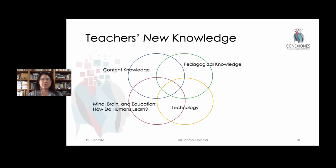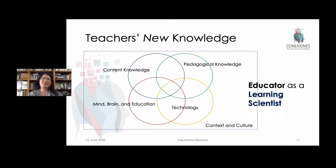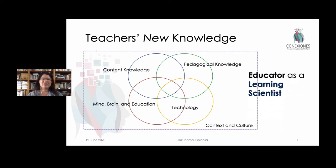Starting around 2007 or so, we began to incorporate much more of the learning sciences. There's a lot more information out there about the brain and how it actually learns that should be a part of teachers' new knowledge. So if we put all of those things within our own context and cultural structures, we can become learning scientists — and that's kind of the ultimate goal these days.